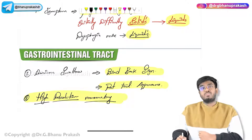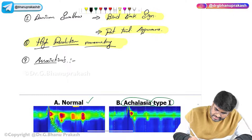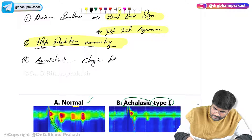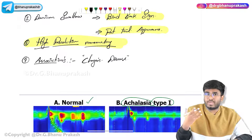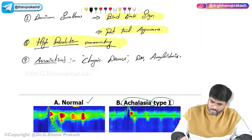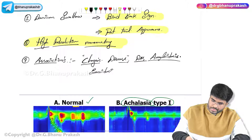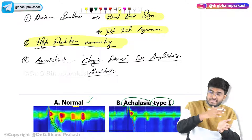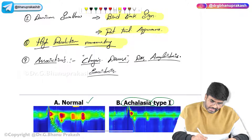Associations of Achalasia Cardia: it is associated with Chagas disease — caused by Trypanosoma cruzi — those individuals will develop Achalasia Cardia. Not only that, even diabetes mellitus, amyloidosis, and sarcoidosis can be associated. Meaning those individuals who have Chagas disease, diabetes mellitus, amyloidosis, or sarcoidosis might develop Achalasia Cardia. These are the associations.